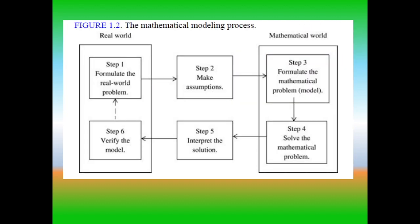The mathematical modeling process can be done by using these six steps. In step one, we have to formulate the real world problem. In step two, we need to make assumptions related to the real world problem. Then the same problem is to be converted into a mathematical problem in step three. In step four, we need to select a suitable mathematical technique in order to solve the formulated problem of step three.